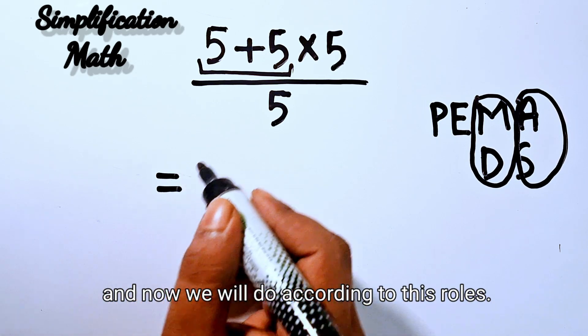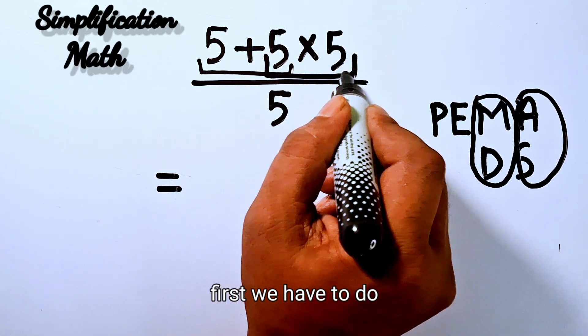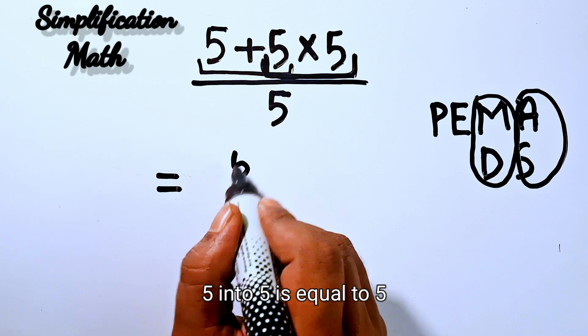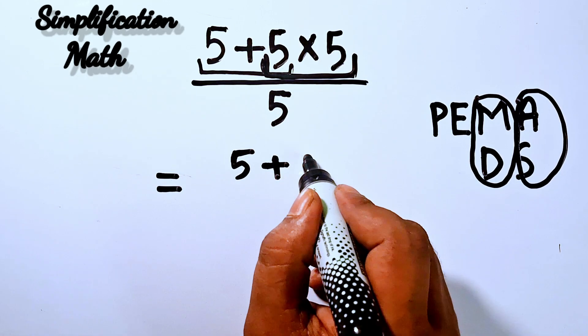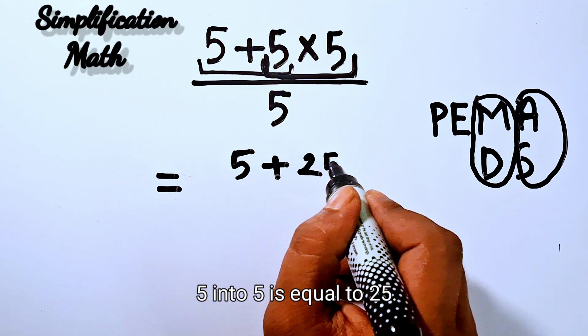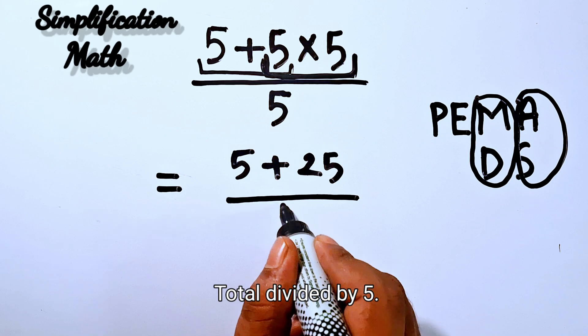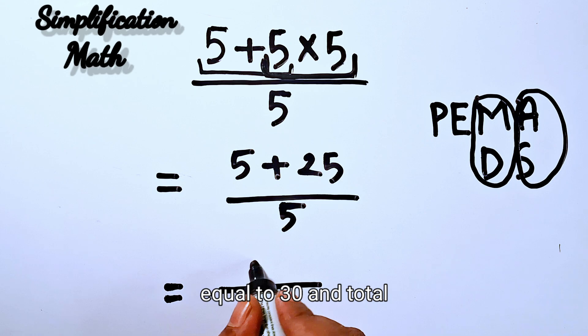Now we will do it according to these rules. First we have to do 5 times 5 equals 25, so 5 plus 25, total divided by 5. Then 5 plus 25 equals 30, and total divided by 5.